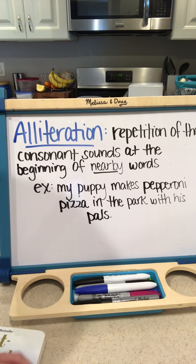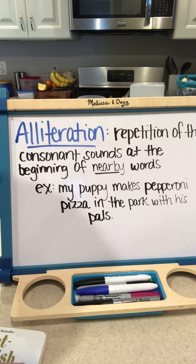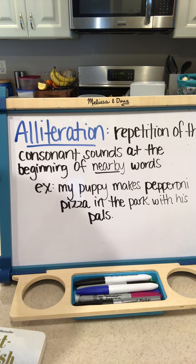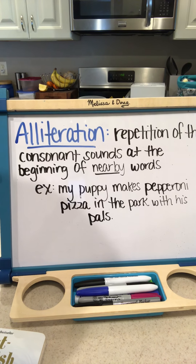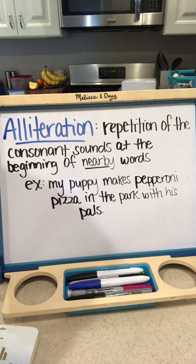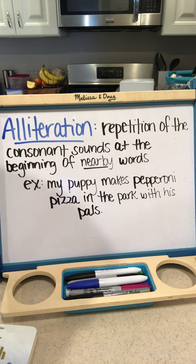Alliteration is a device used by authors just to make the reader have a little bit more fun and to emphasize certain words. I am going to go ahead now and read you a little poem that I found on the internet. It did not have a title, but I'm going to share it anyways because I think that it does a great job really emphasizing alliteration.